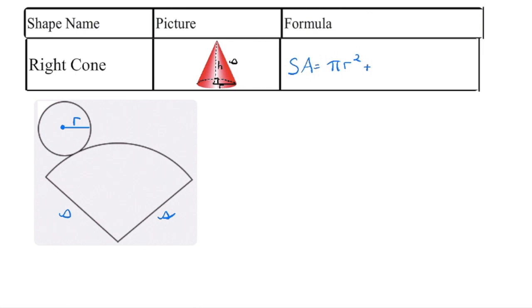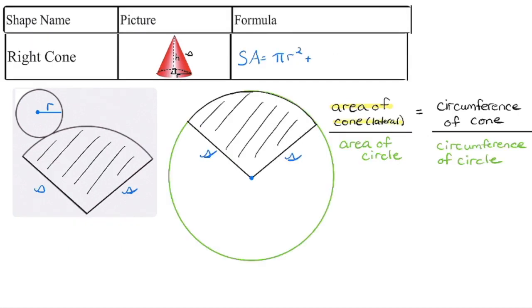In a right cone, the apex is right above the center of the circle base, going up at a 90 degree angle. The base is a circle, so we have pi r squared. If we unravel the lateral surface — like the wrapper on an ice cream cone — we get a curved piece. This is the lateral area, meaning the area of the sides excluding the base. To find it, we place this piece inside a larger circle, where the slant height S is the radius of that larger circle.